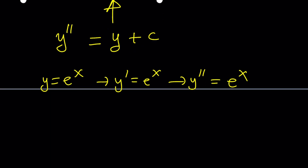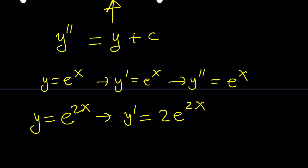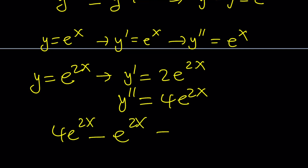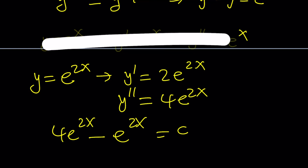If y equals e to the x, then y double prime is e to the x — they are the same. But how could the difference be a constant? Maybe y equals e to the power 2x, or some number times x. Differentiating gives 2e to the 2x, and differentiating one more time gives 4e to the power 2x. Now if you subtract y from this — looking at y double prime minus y equals a constant — plugging in gives 4e to the 2x minus e to the 2x equals a constant. But this is not always a constant, so this is problematic. These assumptions did not get us anywhere.